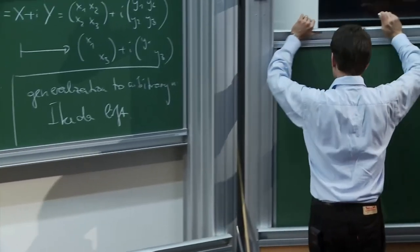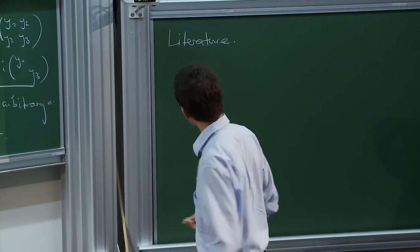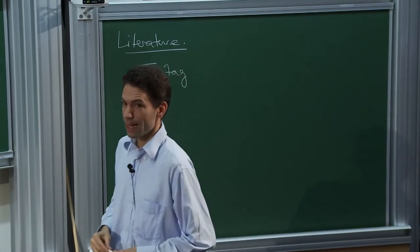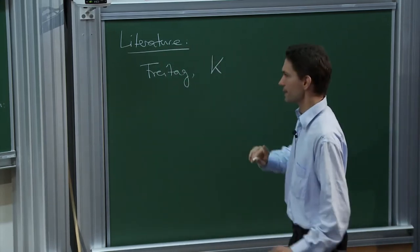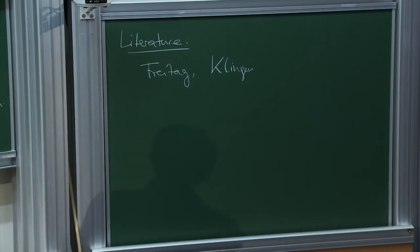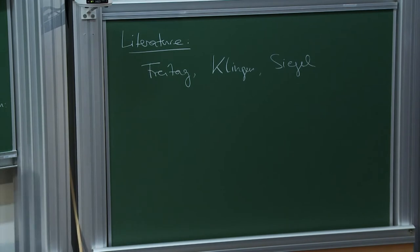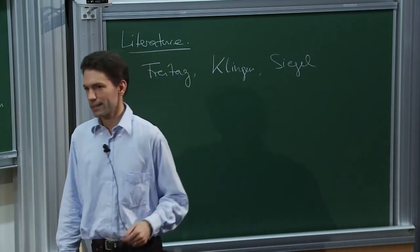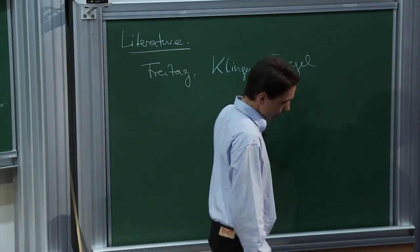For further reading: a very good standard reference is Freitag's book Siegelsche Modulformen, unfortunately in German. There is a shorter book by Klingen — Introductory Lectures on Siegel Modular Forms — in English, which contains a subset of Freitag's material. There is also a very old book by Siegel called Symplectic Geometry, originally a 100-page research paper in the American Journal of Mathematics that was then published as a book; it contains much of the underlying geometry.